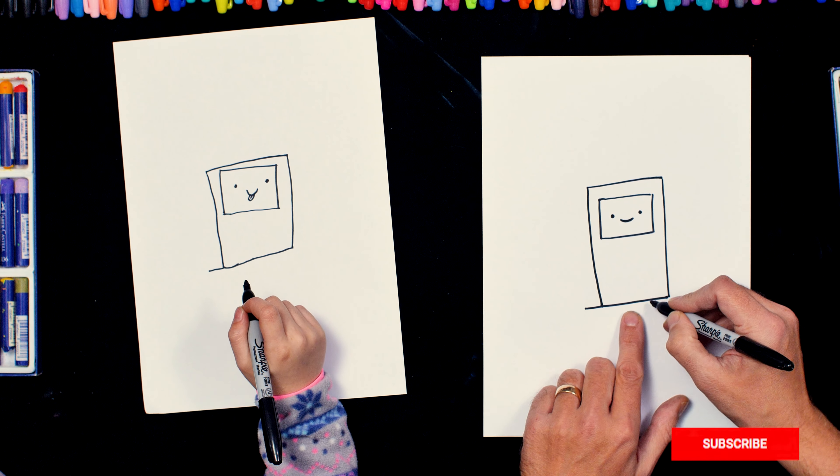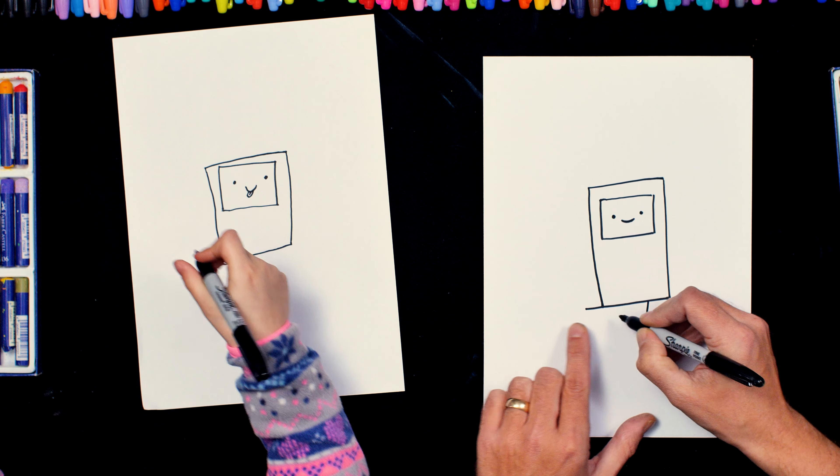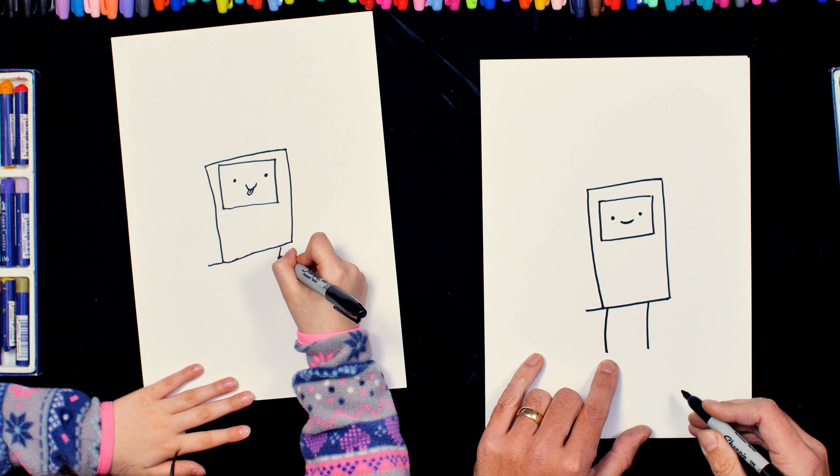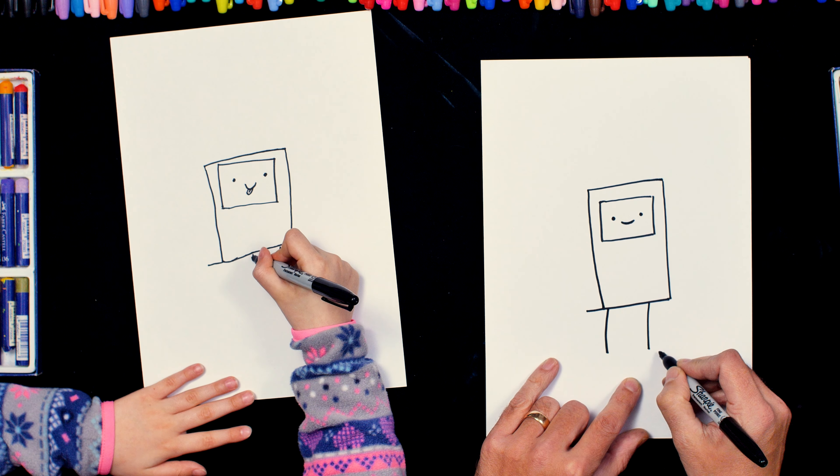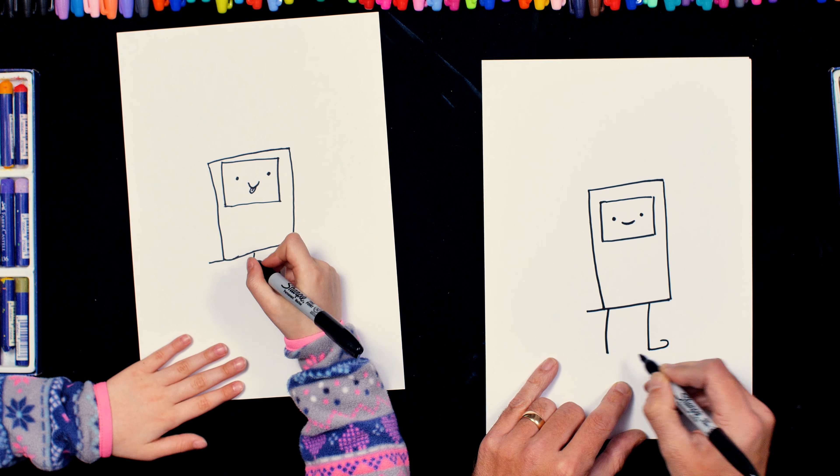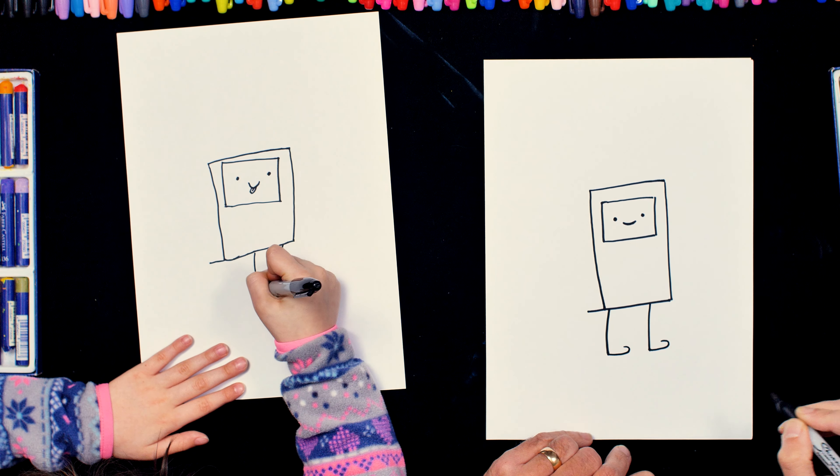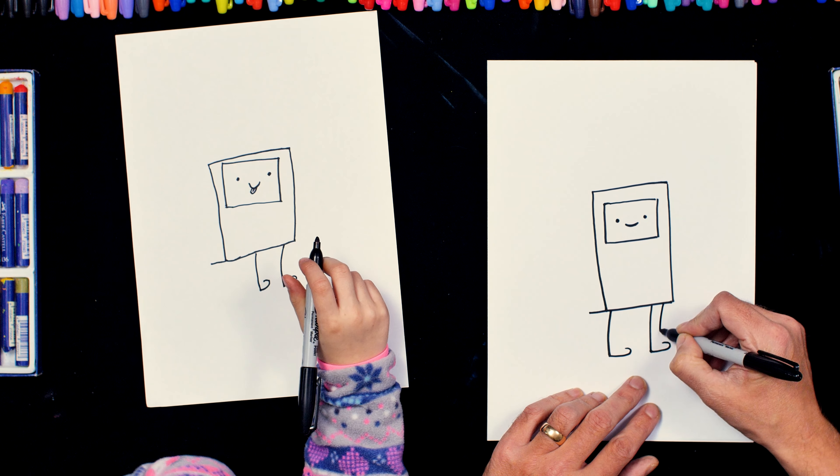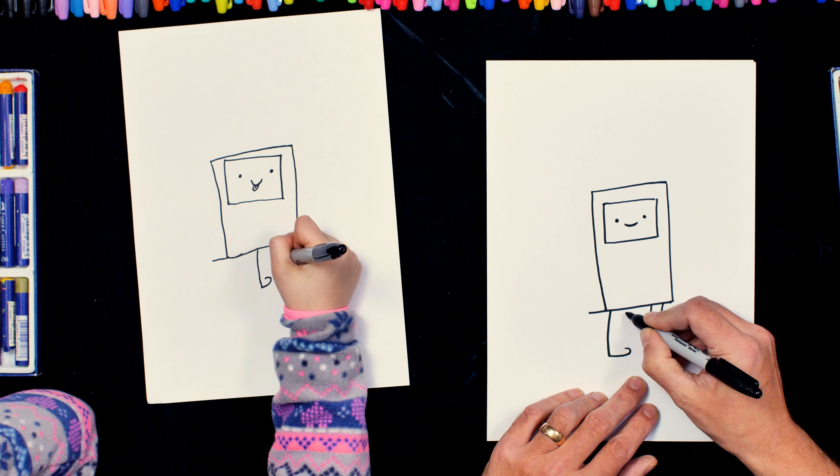Now I'm going to do his legs. So I'm going to do it straight down like that, and the line straight down with a little bit of a curve. And then on the end of those legs, I'm going to do a little loop like that. And then I'm going to do another line coming down again with a little bit of a curve like that.